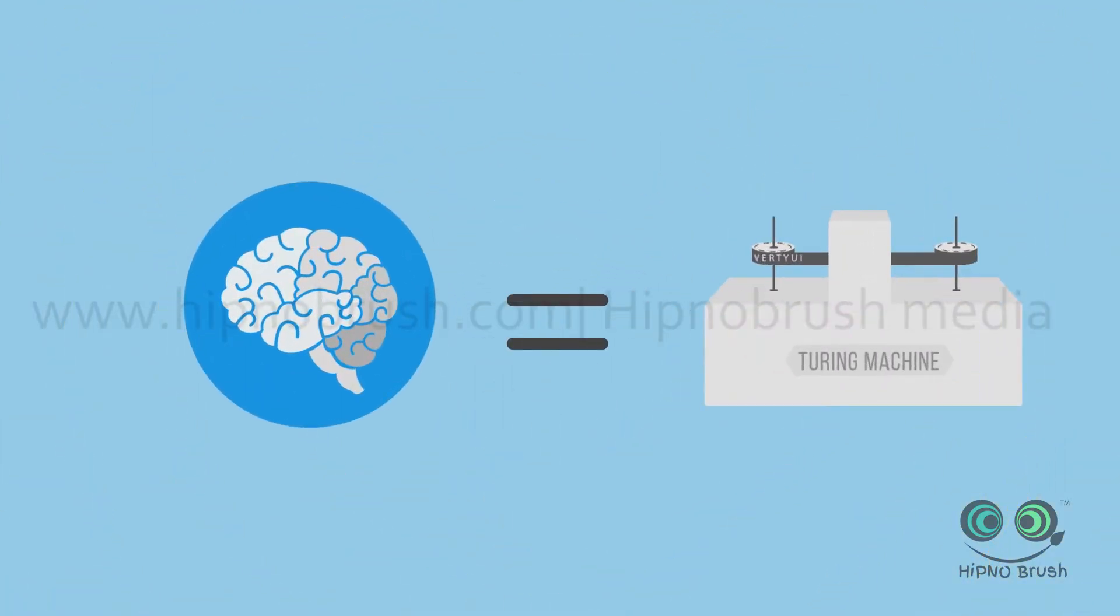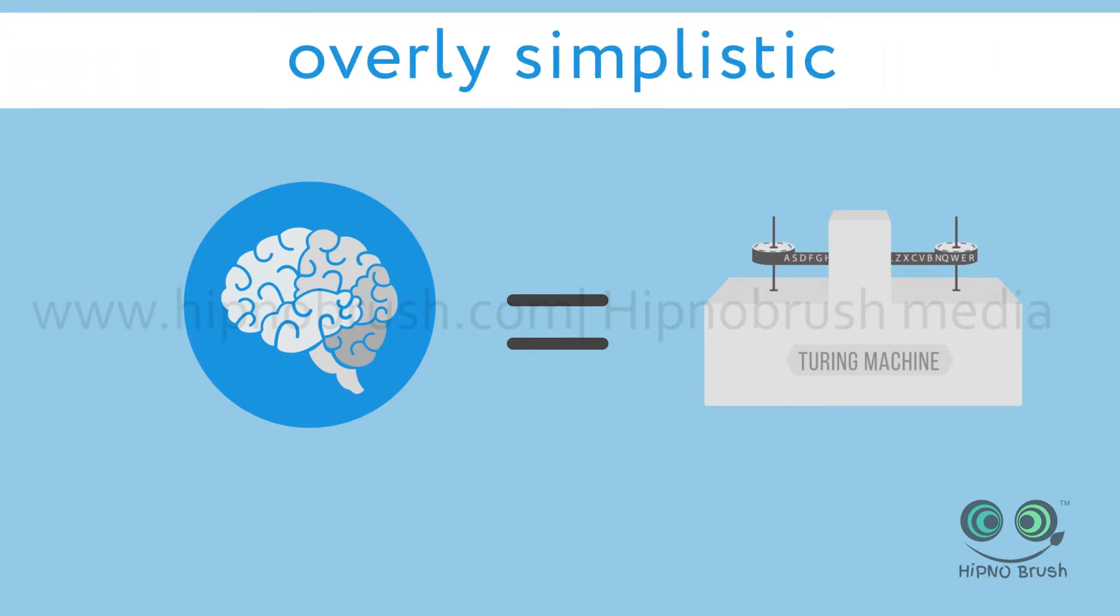Indeed, early cognition research found analogies with computation, but soon found such analogies overly simplistic.